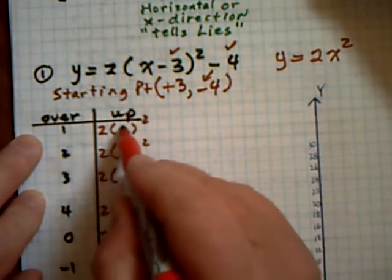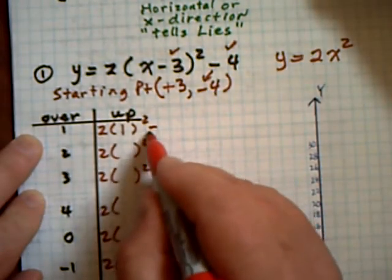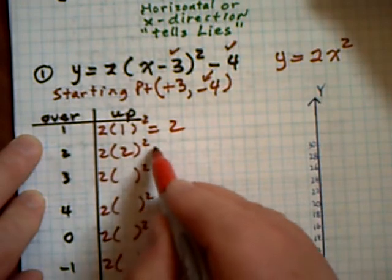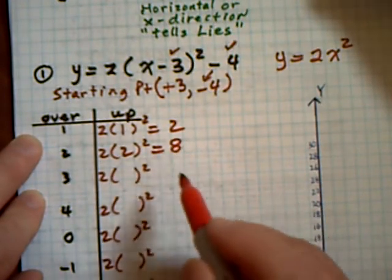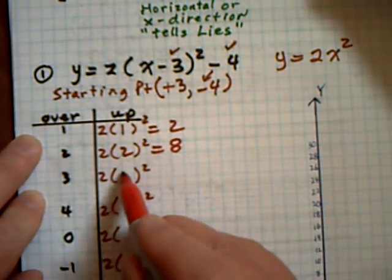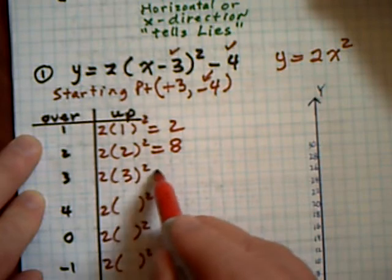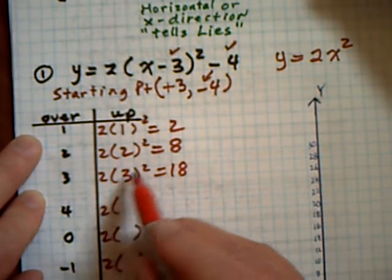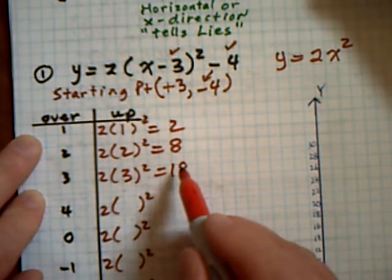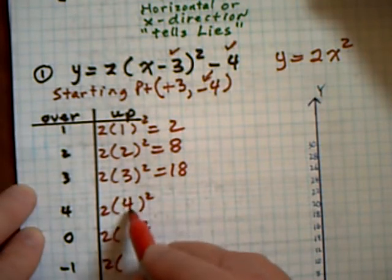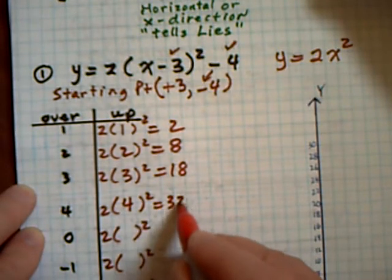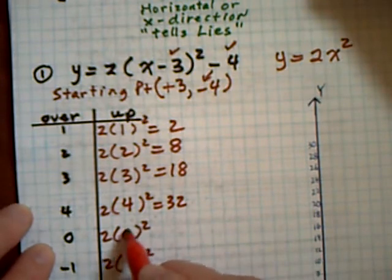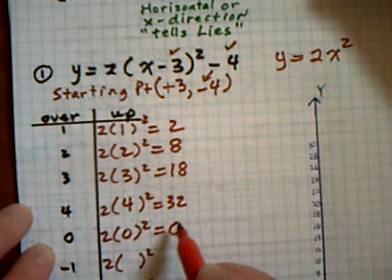So I'm going to do a quick over-up-down table with y equals 2t squared. If I go over 1, I'm going to go up 2 times 1 squared, which is 2. If I go over 2, I'll go up 2 times 2 squared, which is 8. If I go over 3, it'll be 2 times 3 squared, which is 18 — remember, you square first, so that's 9, and 2 times 9 is 18. Over 4, 2 times 4 squared is 32. If I go over 0, 2 times 0 squared is 0.